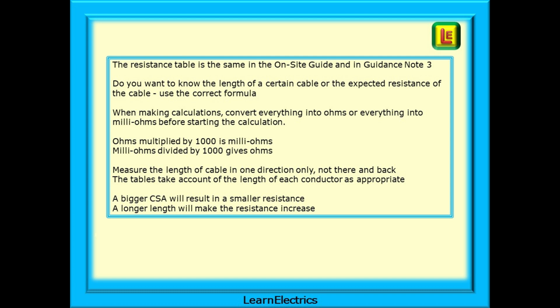A brief summary. The resistance table is the same in the on-site guide and in guidance note three. Do you want to know the length of a certain cable or the expected resistance of the cable? Be sure to use the correct formula to calculate this. When making calculations convert everything into ohms or everything into milliohms before starting the calculation. Ohms multiplied by 1000 is milliohms and milliohms divided by 1000 gives ohms. Measure the length of the cable in one direction only not there and back as the tables take account of the length of each conductor as appropriate and a bigger CSA will result in a smaller resistance whilst a longer length will make the resistance increase.